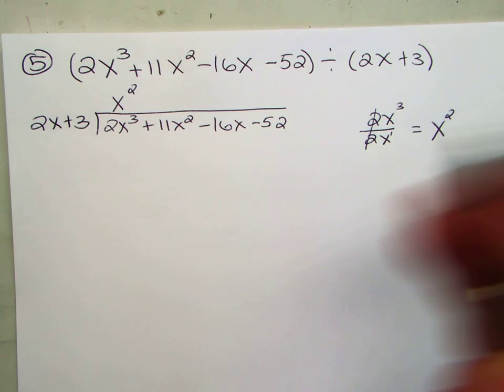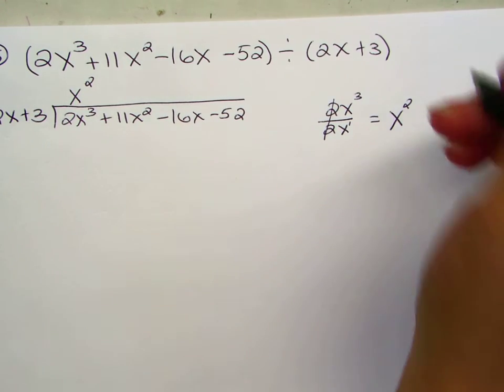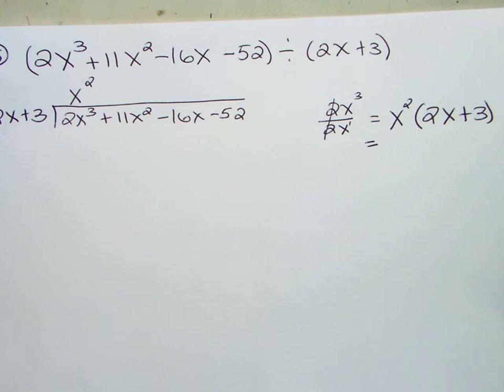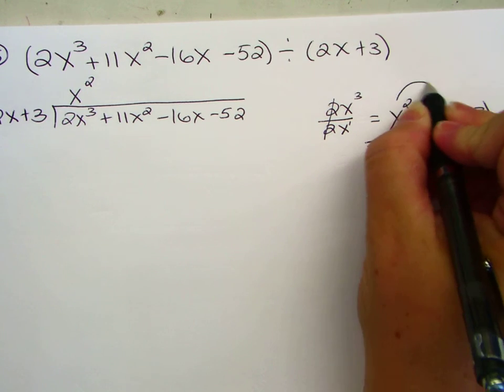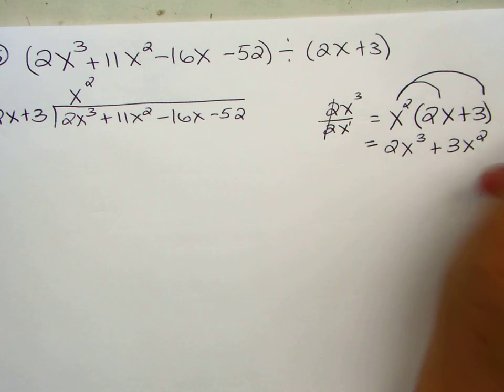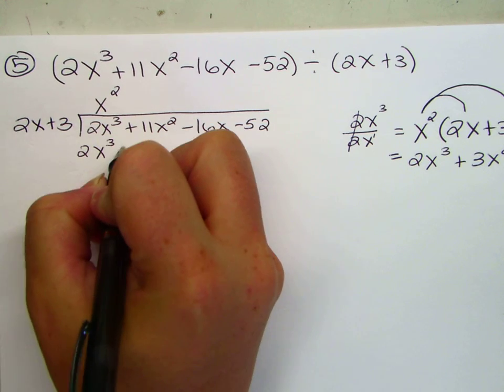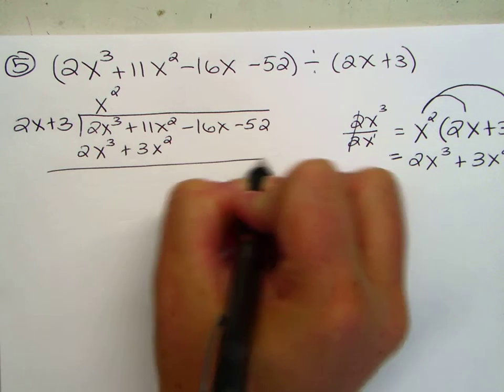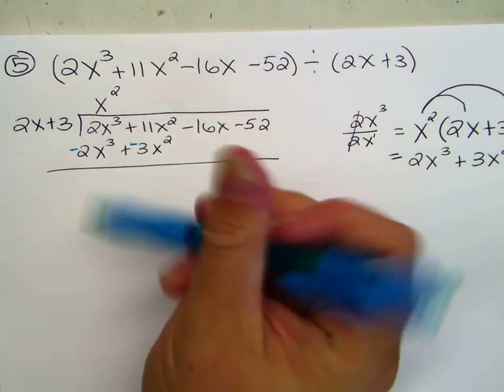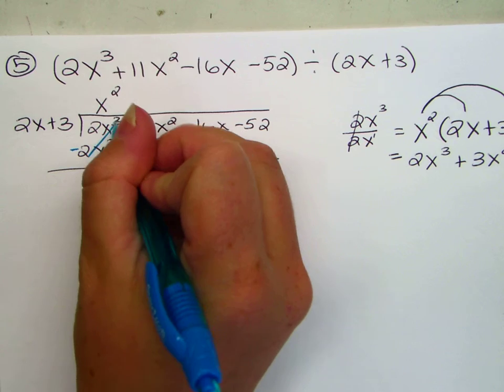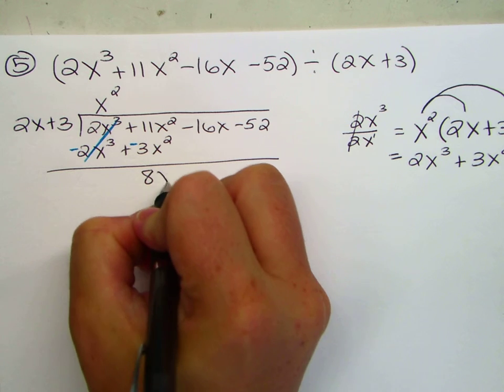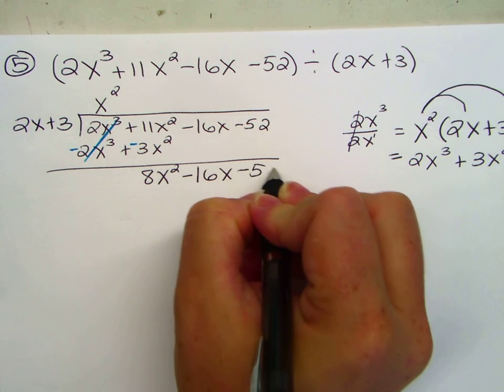Multiply. x squared times 2x plus 3. Again, I'm going to show my work on the side, it just helps me make less mistakes, especially here, the distributing's a little harder because of the coefficient in front of x. 2x to the third plus 3x squared. Put that underneath. 2x to the third plus 3x squared. 2x to the third minus 2x to the third is 0, it cancels out. 11x squared minus 3x squared is 8x squared.